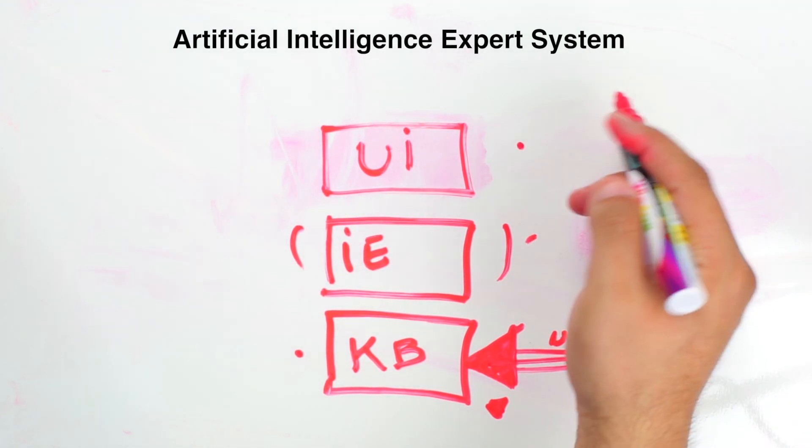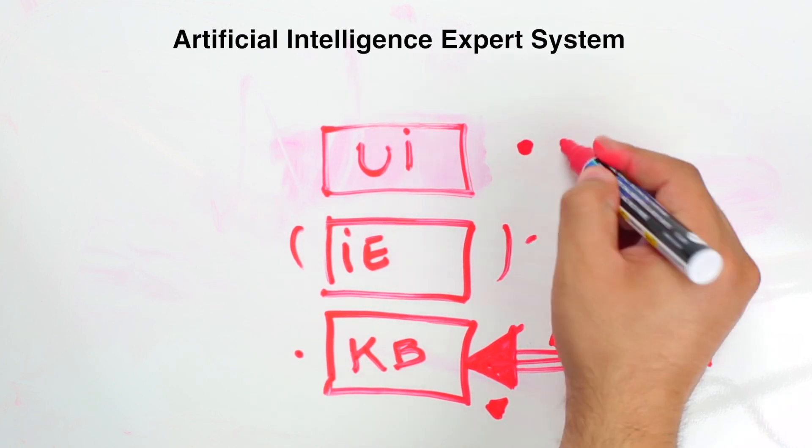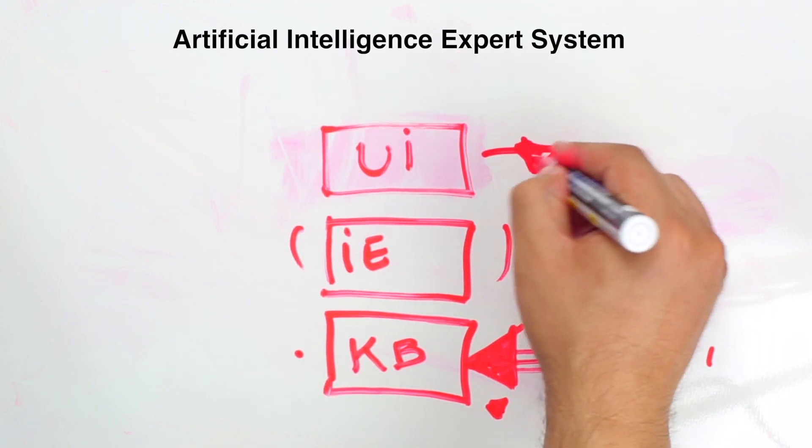And finally, we have the UI, or the user interface. The user interface can be anything that prints a question or receives information from the user. It can be a voice-to-speech and vice versa. It is generally natural language processing, so as to be used by the user who is well-versed in the task domain. The user of the ES, or the expert system, need not be necessarily an expert in artificial intelligence to receive the information here.